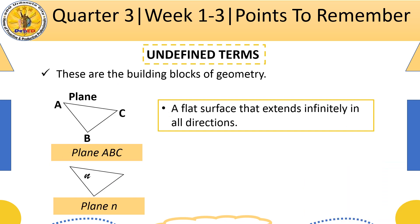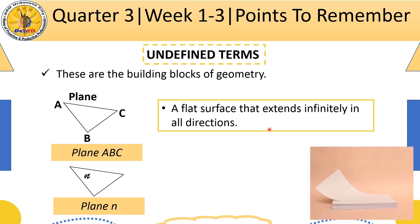The third undefined term is the plane. A plane is a flat surface that extends infinitely in all directions. We name a plane using at least three points on it, for example, plane ABC. Another way of naming the plane is using a small letter, such as plane N. An example of a plane is a sheet of paper.